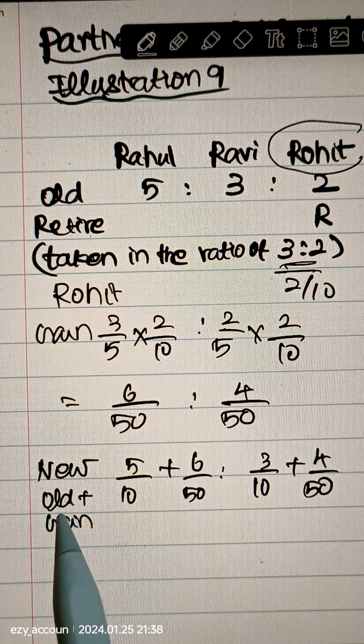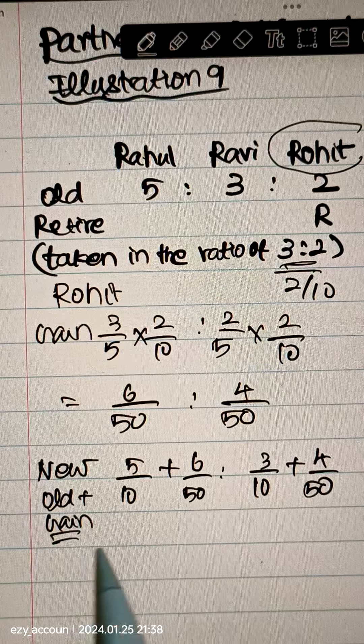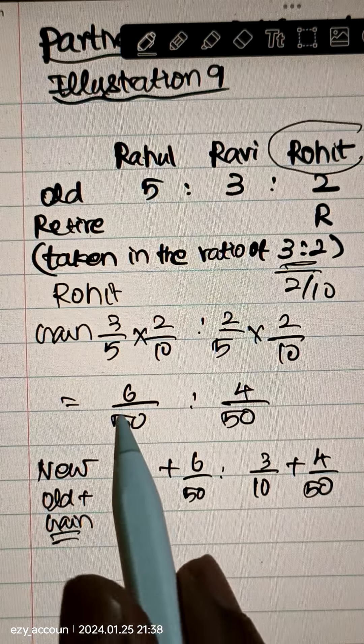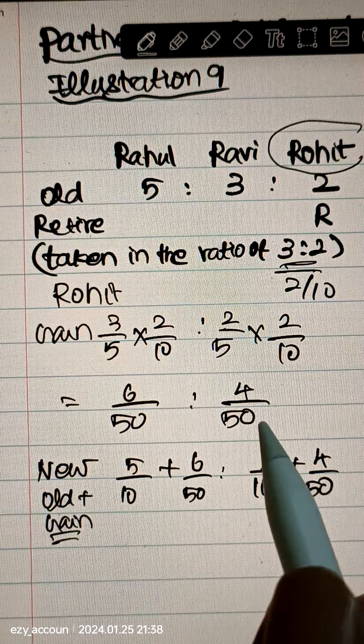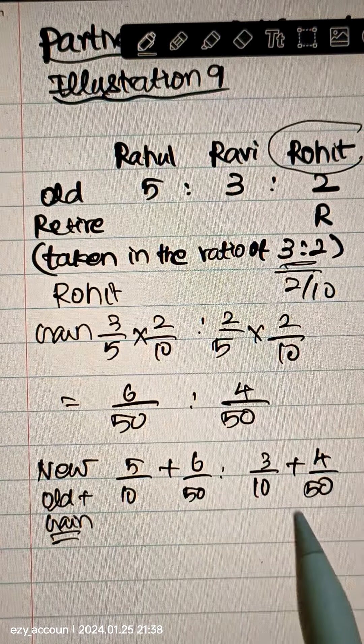New ratio is equal to old ratio plus gaining ratio. Old is 5 by 10. Gain is equal to 6 by 50. So 5 by 10 plus 6 by 50 is equal to 3 by 10 plus 4 by 50.